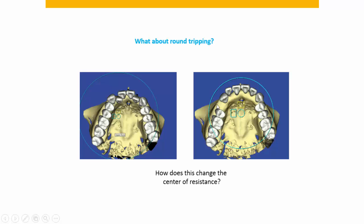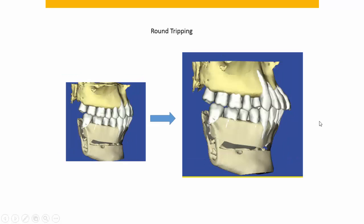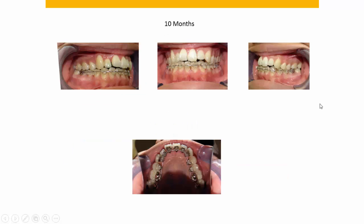I simulated what it would look like to round trip the teeth as opposed to retracting the cuspid and bypassing the lateral and central incisors. From the axial view the teeth are lined up enough so the wire can fit in the slot, but from the coronal or sagittal view the teeth are blown through the cortical plate. We may not fully understand the long-term clinical significance of round tripping at this time, but if you can avoid it, why not?